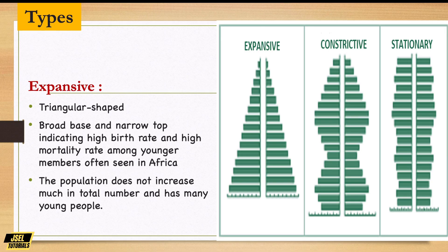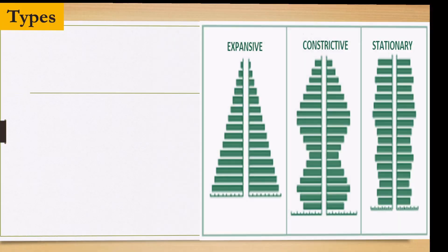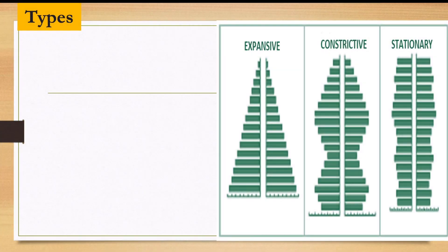The population does not increase much in total number but has many young people — it's typically a youthful population. Now let's look at the constrictive type.